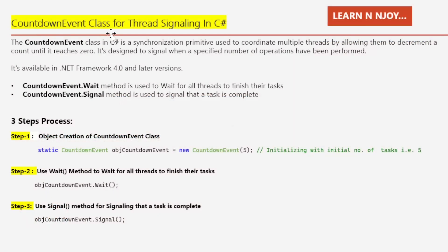The CountdownEvent class in C# is a synchronization primitive used to coordinate multiple threads by allowing them to decrement a count until it reaches zero. It's designed to signal when a specified number of operations have been performed. Let's understand the CountdownEvent class with the help of an analogy.